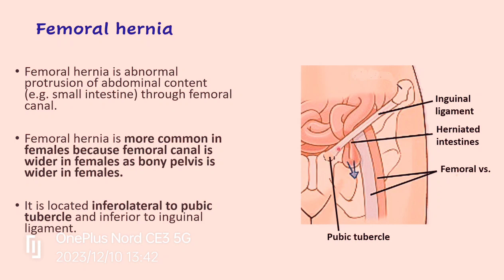In femoral hernia, the swelling is located inferolateral to the pubic tubercle — inferior and lateral to it. This is important because the inguinal canal lies above the medial part of the inguinal ligament, so inguinal hernia is superior and medial to the pubic tubercle, whereas femoral hernia is inferior and lateral to the pubic tubercle.